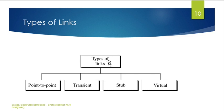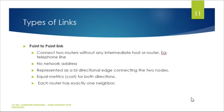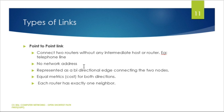Links in OSPF are classified into four types: point-to-point, transient, stub, and virtual. A point-to-point link directly connects two routers without any intermediate host or router. A telephone line is an example of a point-to-point link. There is no network address in between, and it is represented as a bidirectional edge connecting two nodes — communication occurs in both directions, unlike a single directional link.